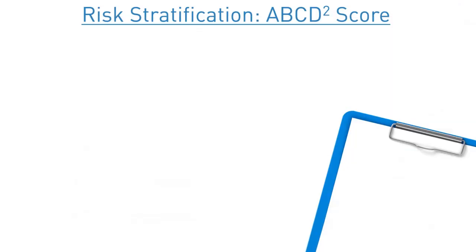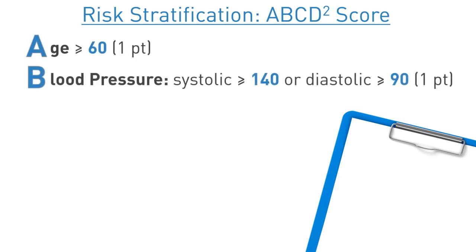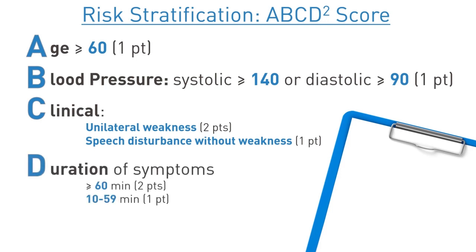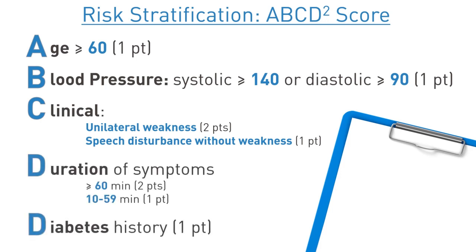An easy-to-use tool to risk stratify patients is the ABCD2 score: Age greater than or equal to 60; Blood pressure greater than or equal to 140 over 90; Clinical features of unilateral weakness or speech disturbance; Duration of symptoms; and diabetes history. Patients with an ABCD2 score of 4 or higher should receive dual antiplatelet therapy.